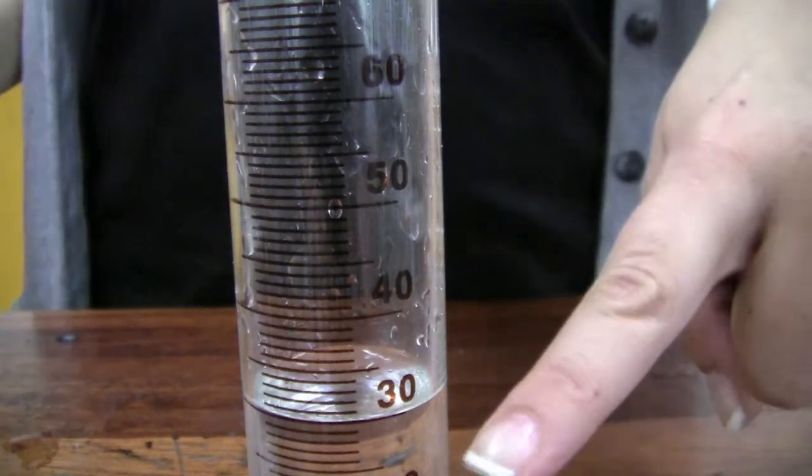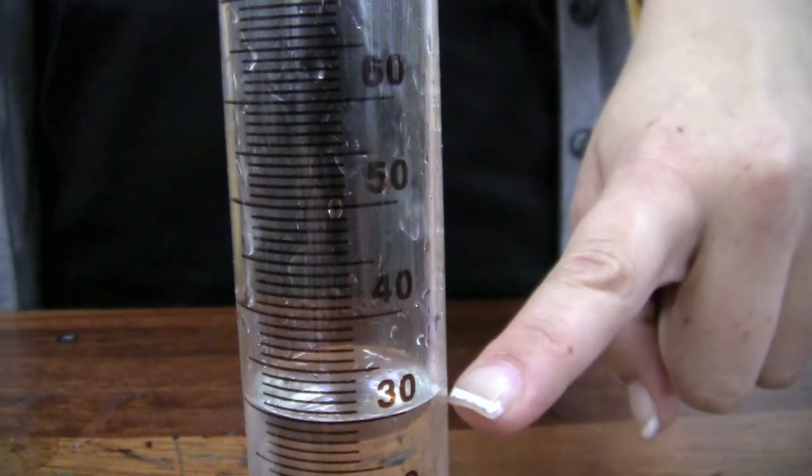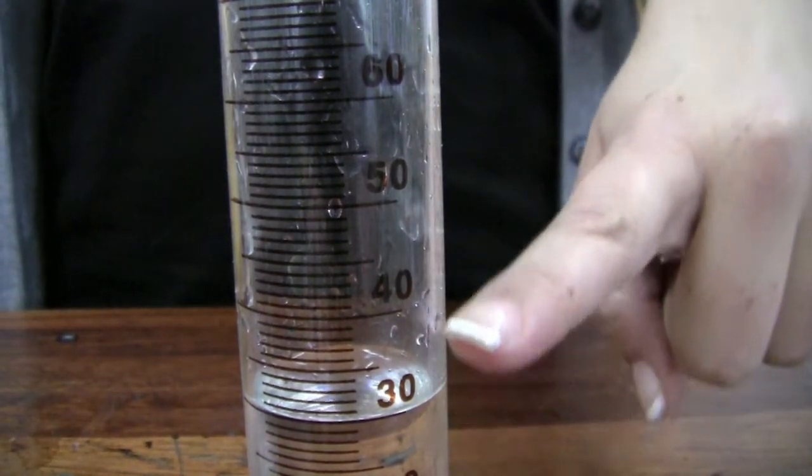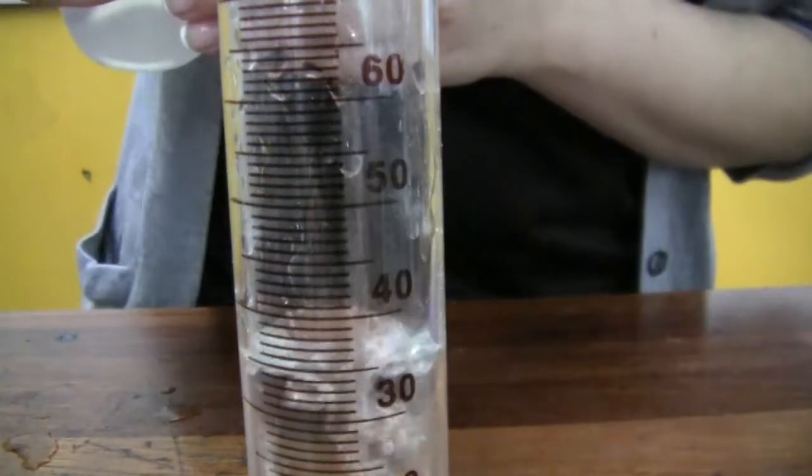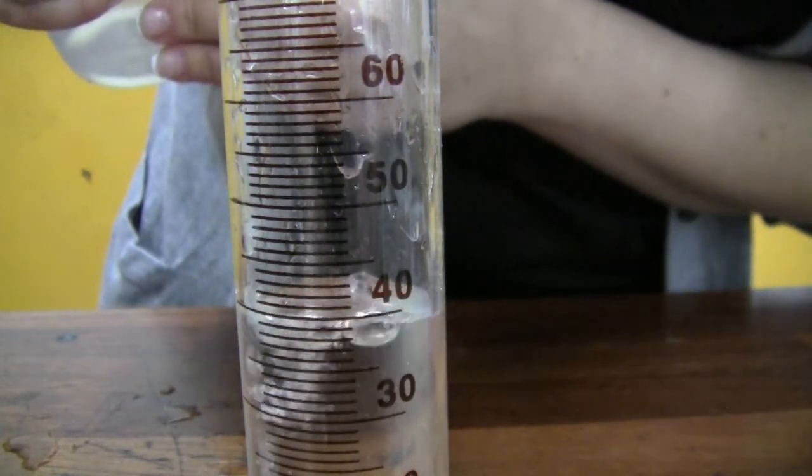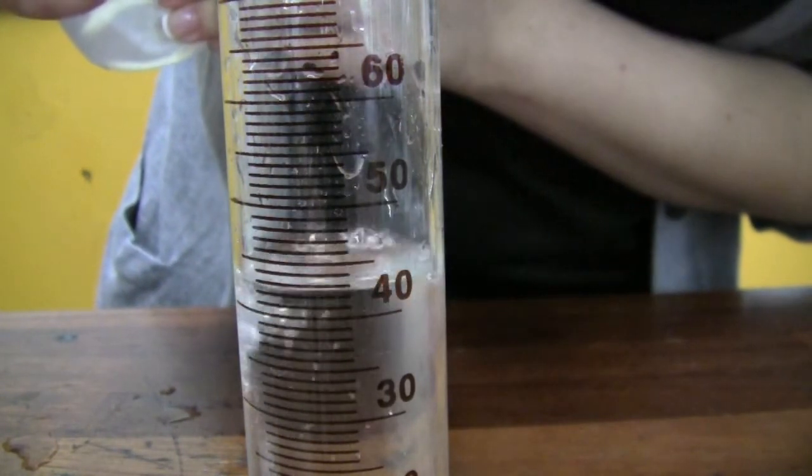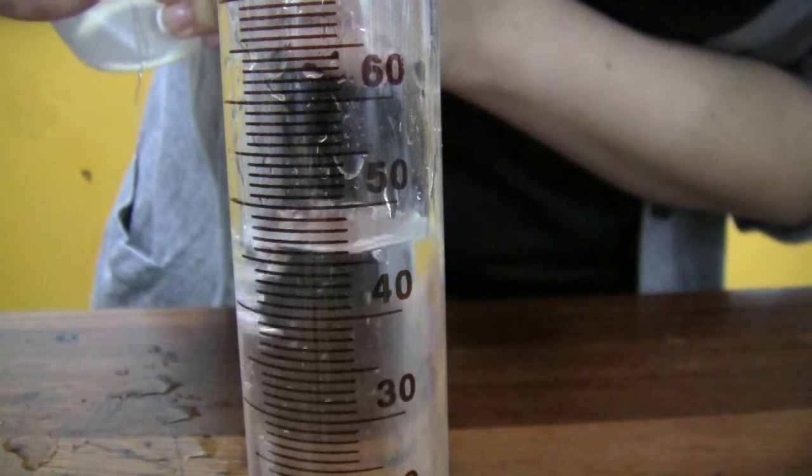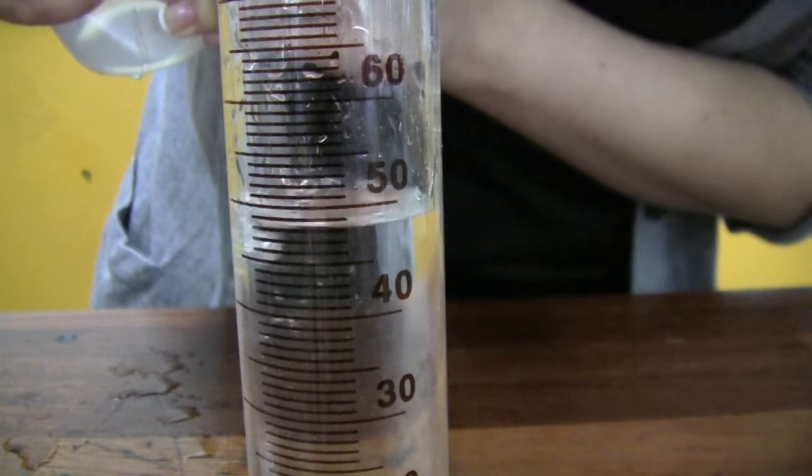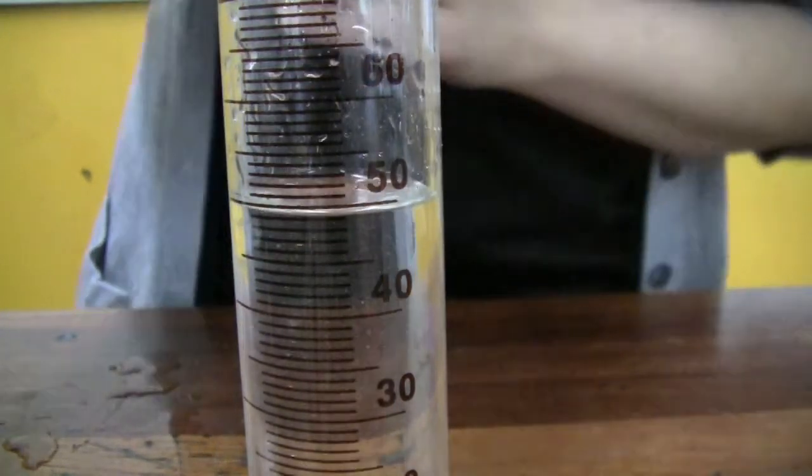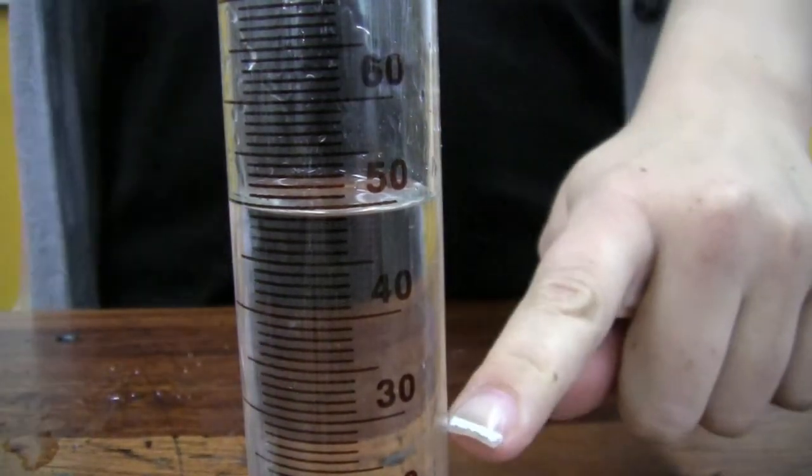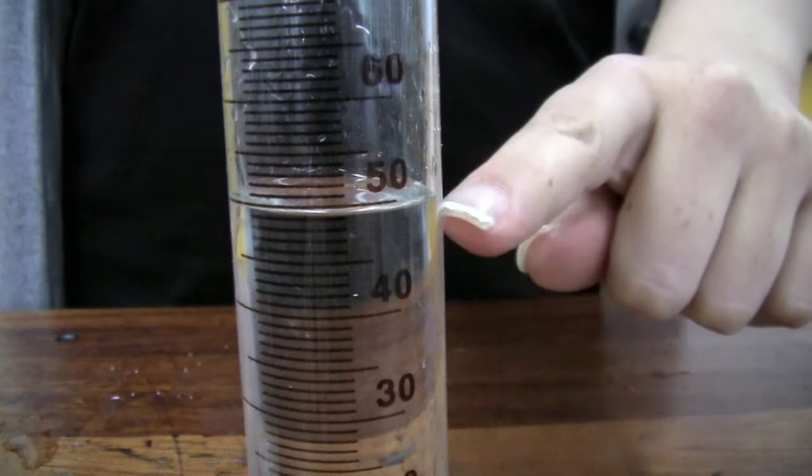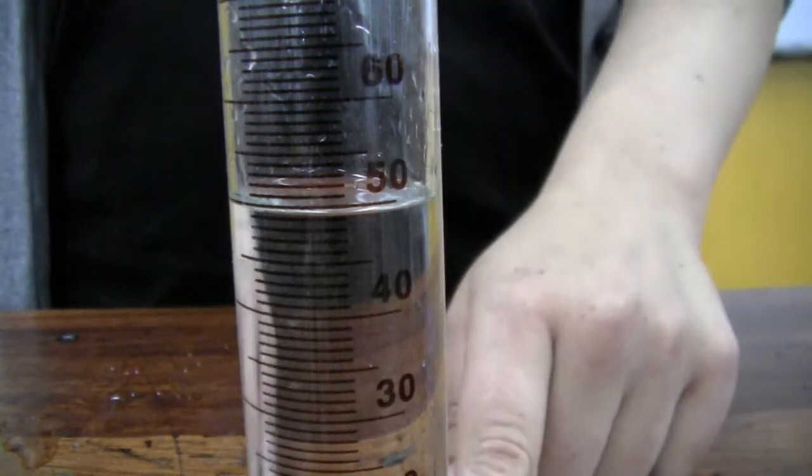Then we've got 30 ml of sodium thiosulfate. We now need 20 ml of water to make it up to 50, using the squeezy bottle again. And we stop at 50. So we've got 30 ml of sodium thiosulfate and 20 ml of water. This is our third dilution.